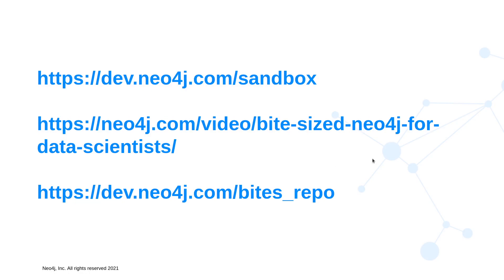Today we're going to keep playing with the same data that we've been playing with for the past two videos of this series — namely an airport routing graph. We have it within SQL and we have it within Neo4j.